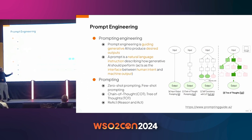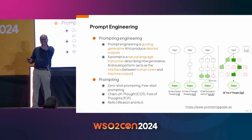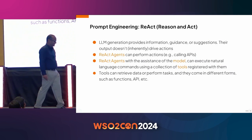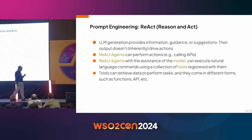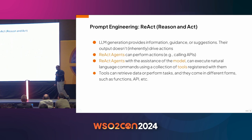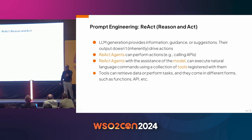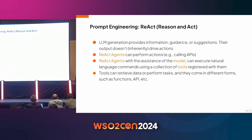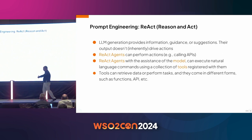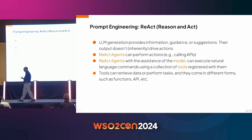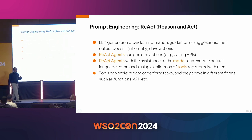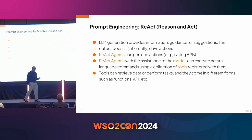Let's take a look at one called ReAct — Reason and Act. This is specifically important because it has a connection to tools. LLMs or generative AI inherently don't perform actions — they generate or suggest things. ReAct introduces the concept of ReAct agents which, with the help of large language models, can perform actions. These actions involve calling different tools — functions, APIs, API resources, and so on.